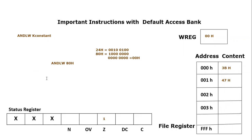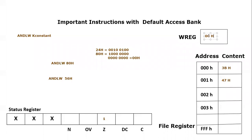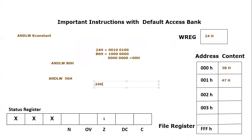Let's take another example to further explain ANDLW. This time we write ANDLW 0x56. We consider the working register value is again 0x24 as before. We will perform AND between 0x24 and 0x56.